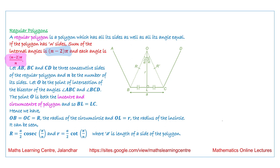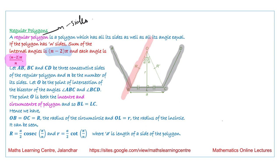Next we are going to calculate the radius of the inner circle and the circumcircle. Suppose we have a regular polygon and consider three consecutive sides AB, BC, and CD. If we draw the angle bisector of angle ABC and the angle bisector of angle BCD, both lines intersect at point O, which is both the incenter and the circumcenter of this polygon.